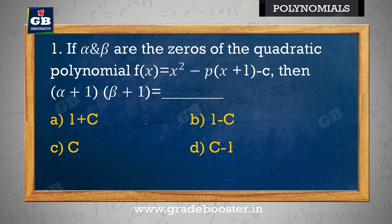If alpha and beta are the zeros of the quadratic polynomial f(x) = x² − p·x + (1 − c), then (alpha + 1)(beta + 1) is equal to: a) 1 + c, b) 1 − c, c) c, d) c − 1.